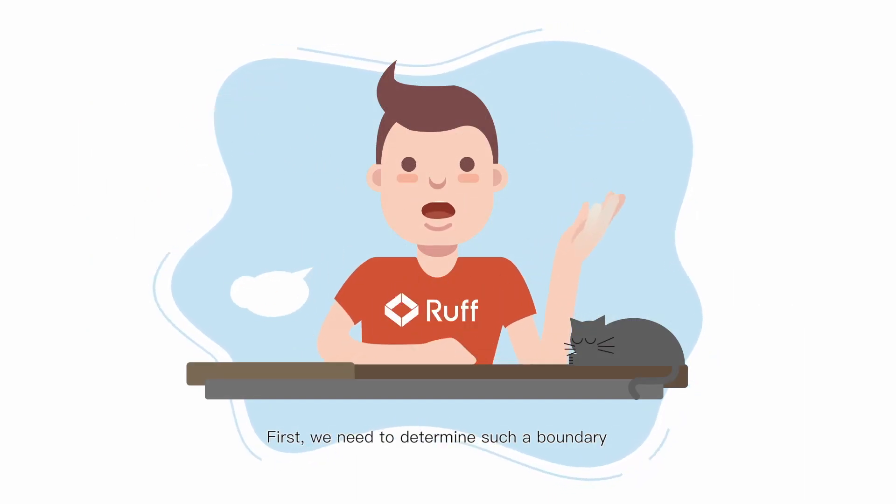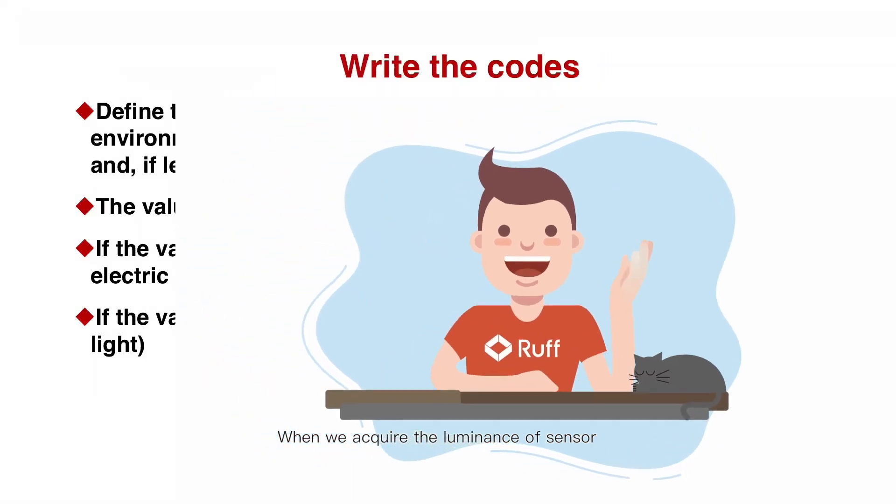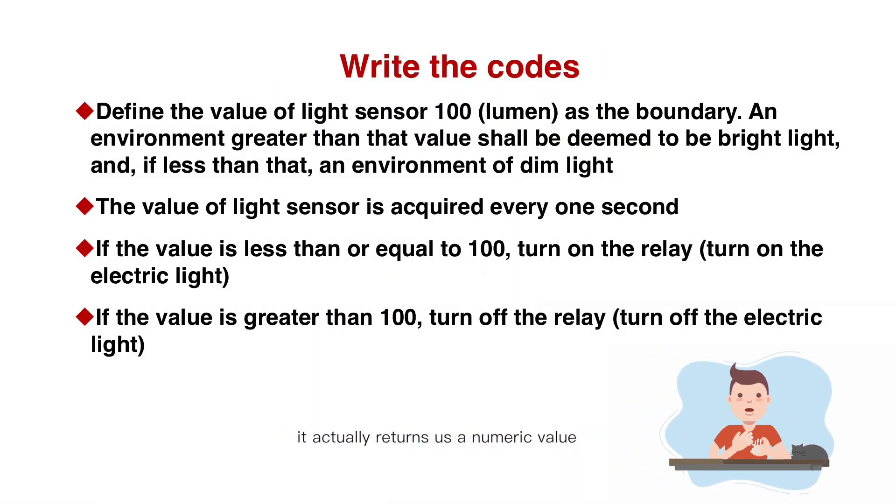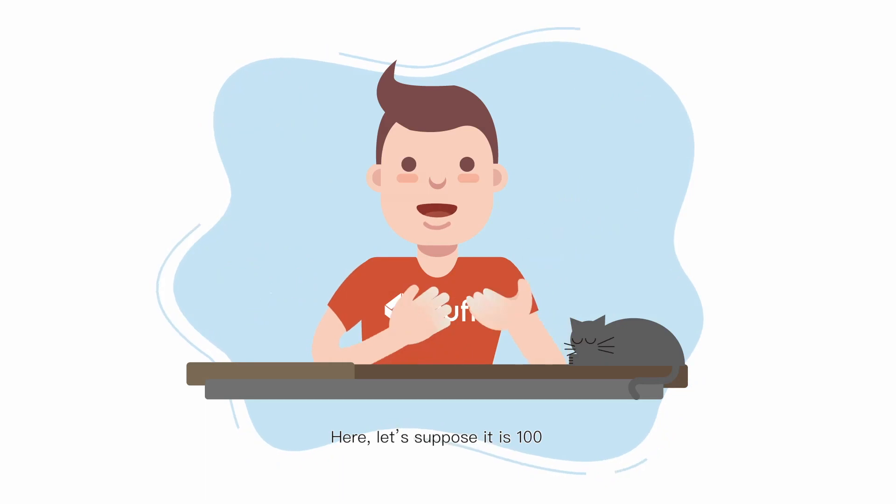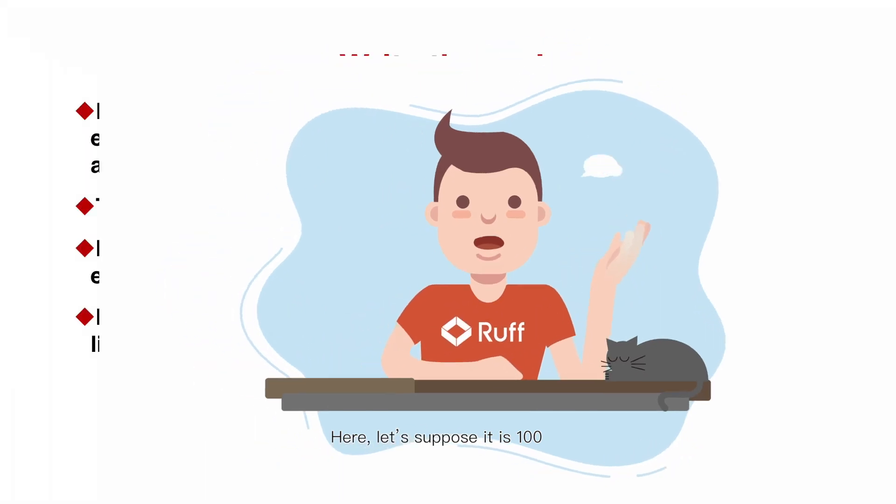First, we need to determine such a boundary. When we acquire the luminance of sensor, it actually returns us a numeric value and its unit is lumen. So we need to define a boundary value here. Let's suppose it is 100.